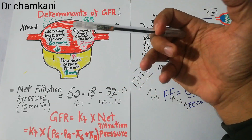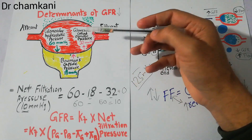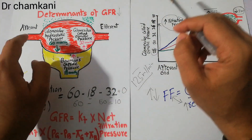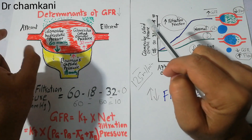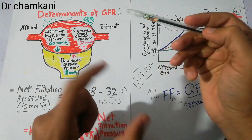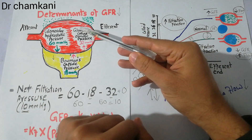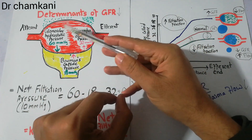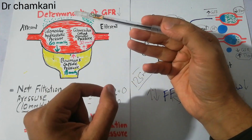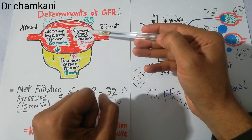The first factor that can increase glomerular colloid osmotic pressure: if the blood entering through the afferent arteriole contains a high amount of proteins, then the amount of proteins in the glomerular capillaries will also be high, and due to that, the glomerular colloid osmotic pressure will increase.